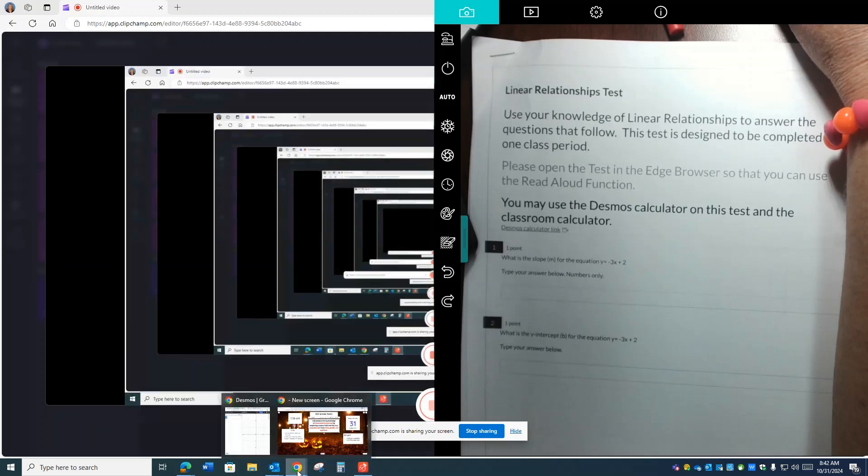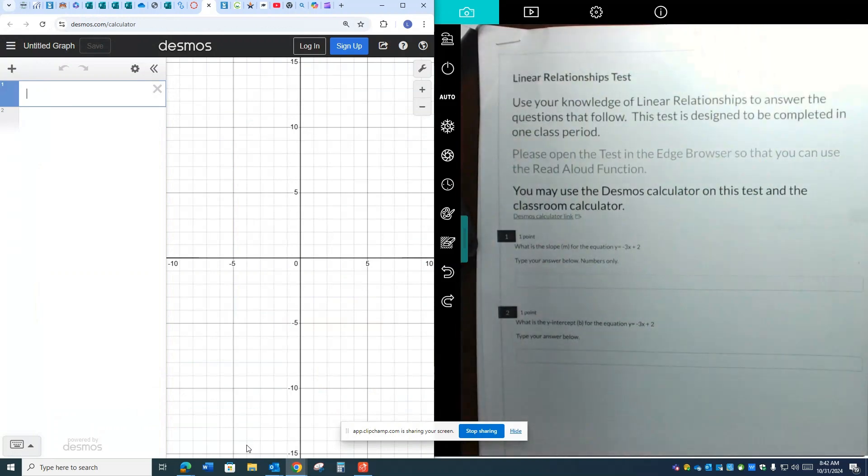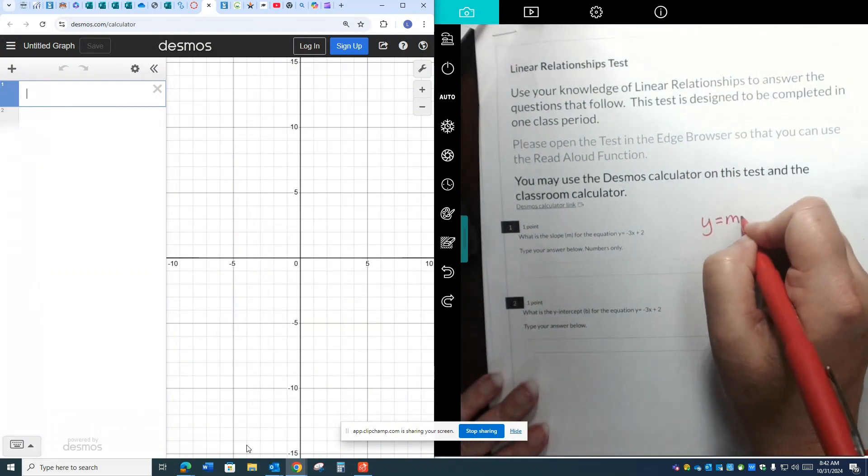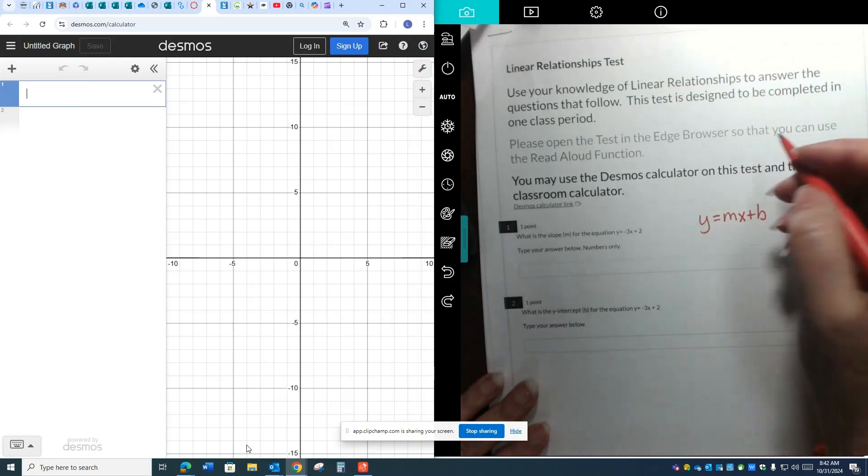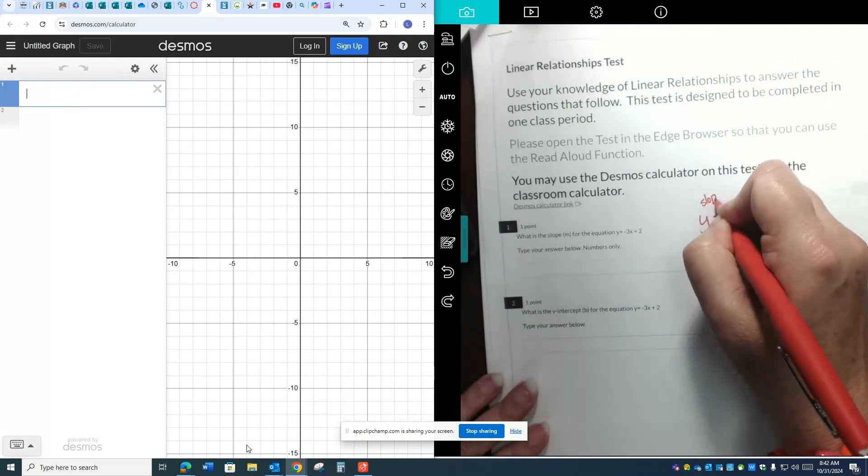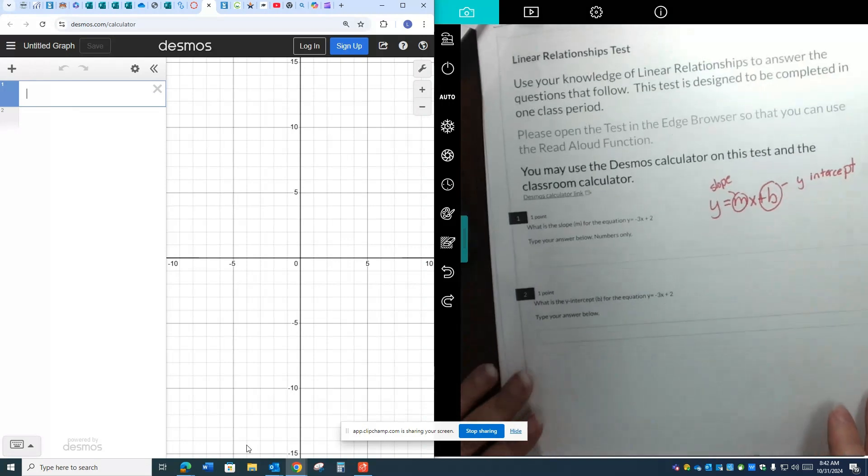Okay, here we go. We are going to correct our linear relationships test. Let's just get started. What you need to remember for most of this test is this equation: y equals mx plus b, where m represents the slope and b represents the y-intercept. That is the big picture for this unit.